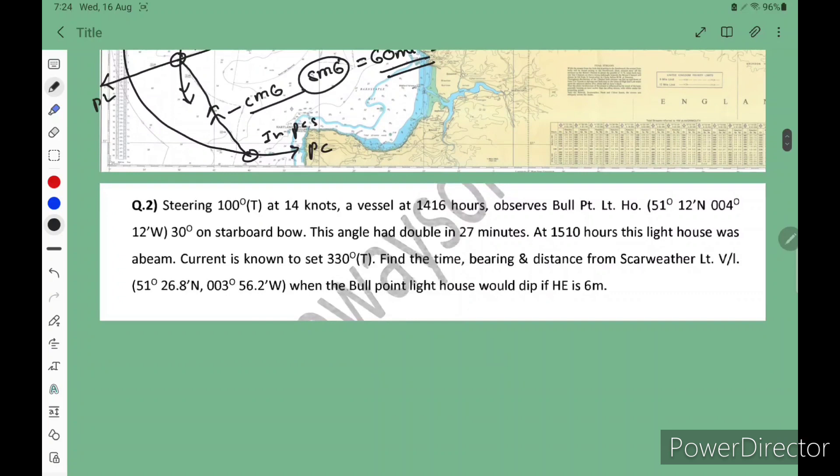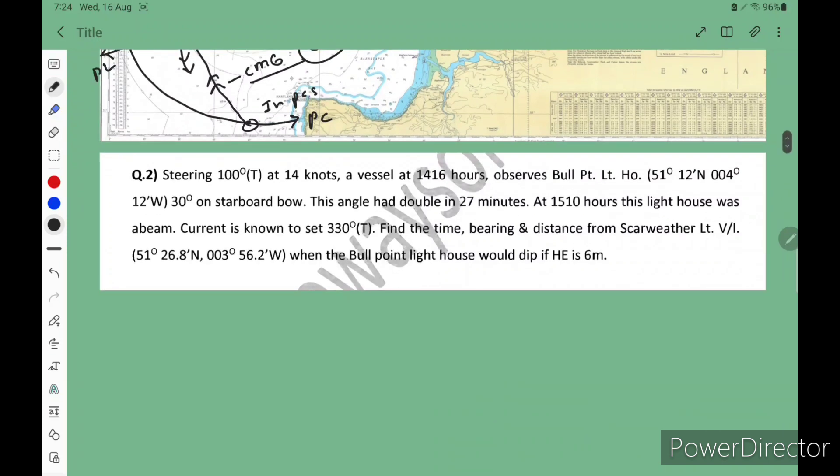The second question is the most confusing question. Students doubt that it is doubling the angle on the bow and already is three point bearings. Let's see why it is not doubling the angle bow, why it is three point bearing. First we have to understand the question, then solve this question.